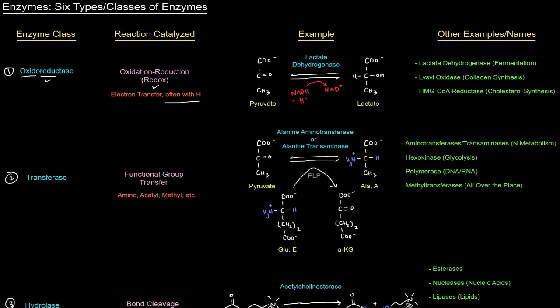An example is lactate dehydrogenase, turning pyruvate into lactate — this reaction is reversible. The key difference between the two molecules is that pyruvate has a carbonyl group whereas lactate has an alcohol. We gained two hydrogens going from pyruvate to lactate, so pyruvate was reduced. Since pyruvate was reduced, NADH lost its hydrogen and was oxidized. That's a redox reaction catalyzed by a dehydrogenase, which you should associate with redox reactions.